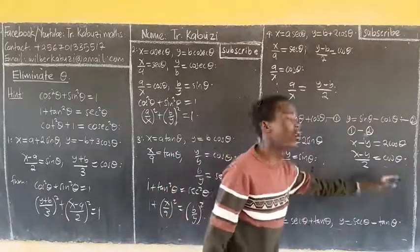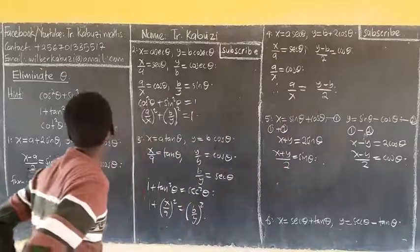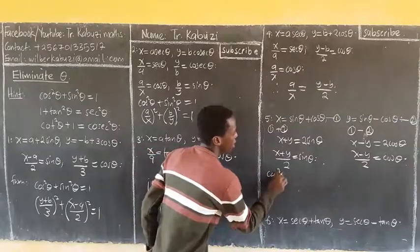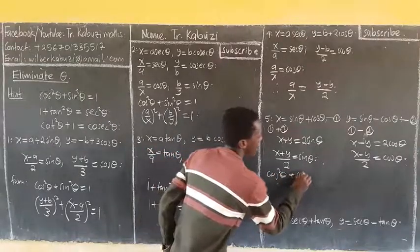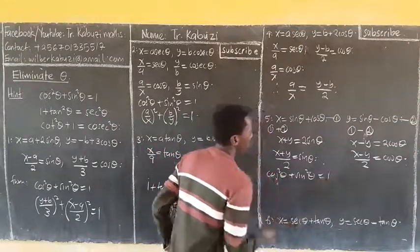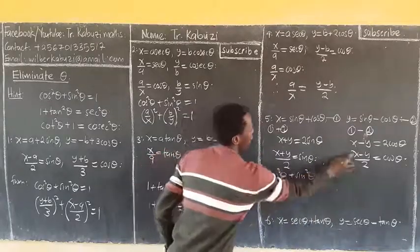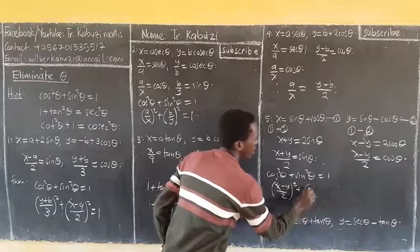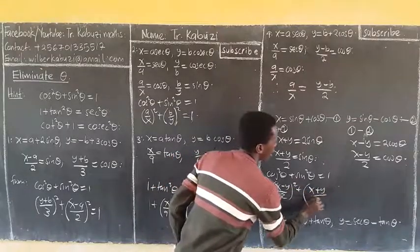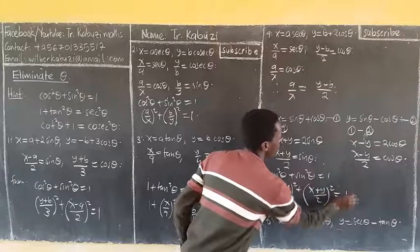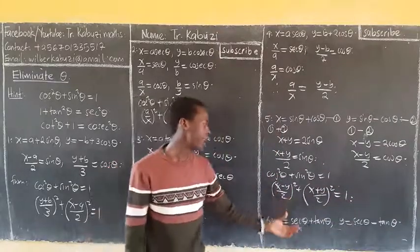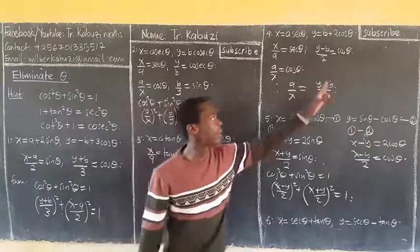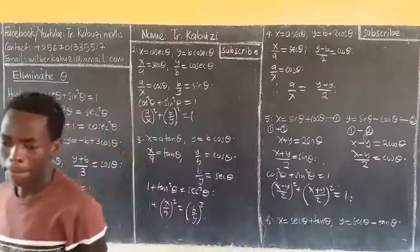Now we have sin and cos, and the identity that combines them is the first one: cos squared theta plus sin squared theta equals 1. Substituting: (x minus y over 2) squared plus (x plus y over 2) squared equals 1. And from there, remember, we have eliminated theta. Please try this out. I wish you the best. Don't forget to subscribe to the channel. Thank you.